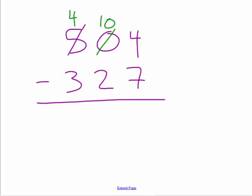Again, I cannot do 4 ones minus 7 ones, so I have to borrow 10 ones from the 10 tens in the tens place. Now I only have 9 tens, but I have 14 ones. So 14 minus 7 is 7.